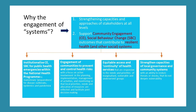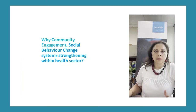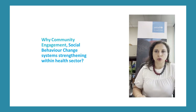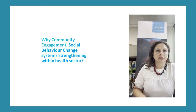Ensuring we focus on strengthening capacities at multiple levels, particularly at the most local and community level, and investing resources into building the systems around that — whether governance structures, local government structures, or community structures — brings us to the question of why community engagement and social behavior change system strengthening within the health sector and public health emergencies.